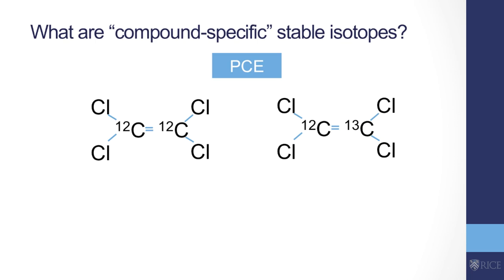Let's look at this from the standpoint of one of those contaminants to show why we call these compound-specific stable isotopes. Here's PCE, which has two carbons. Most of the time both are C12, but sometimes one will be C13, making it slightly heavier — that's shown on the right. It turns out these look different to microbes thinking about degrading a bunch of PCE molecules. It's easier for them to process the smaller molecules — the atoms without that extra neutron.